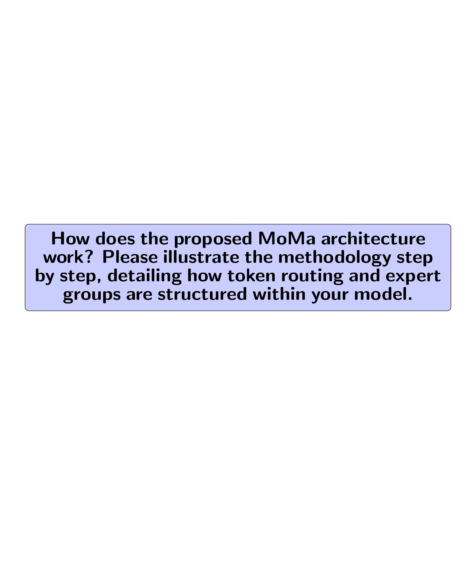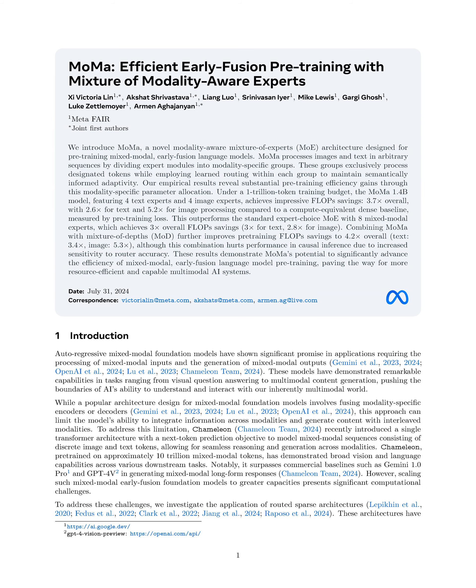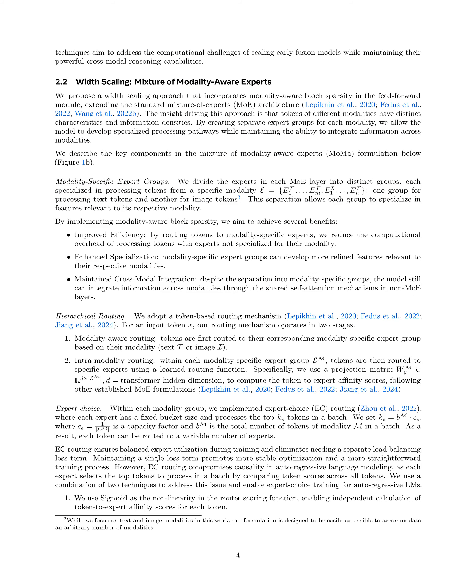How does the proposed MoMA architecture work? The proposed MoMA architecture operates by implementing a mixture of modality-aware experts (MoMA) within a unified early fusion transformer model. First, the architecture divides the experts in each mixture of experts layer into distinct groups, with one group dedicated to processing text tokens and another for image tokens, allowing for specialized processing pathways.